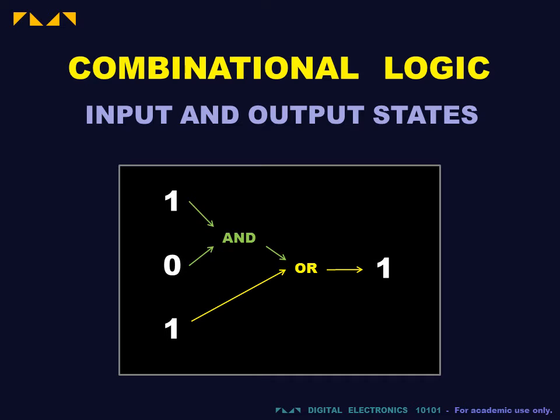At any particular time each input and output is in a particular state, true or false. We more frequently represent these values as numbers, zero for false, one for true. This sets us up for binary arithmetic.